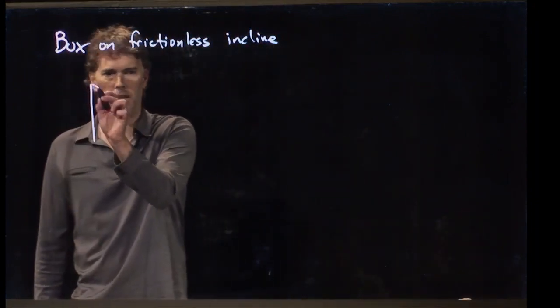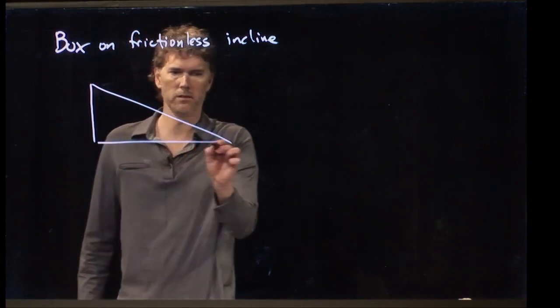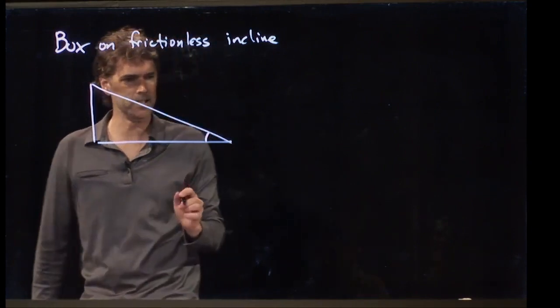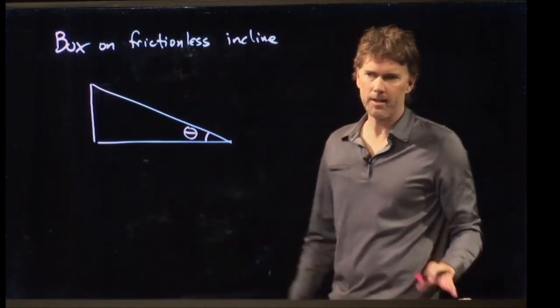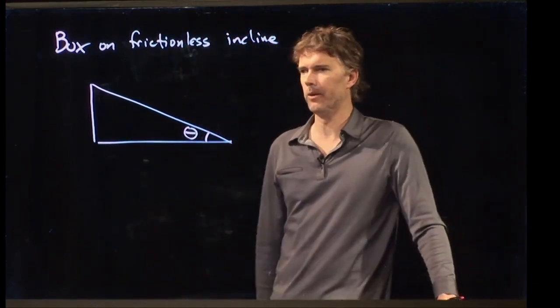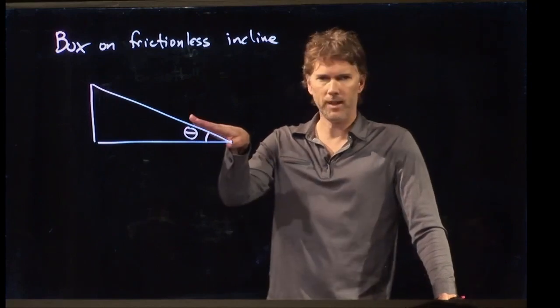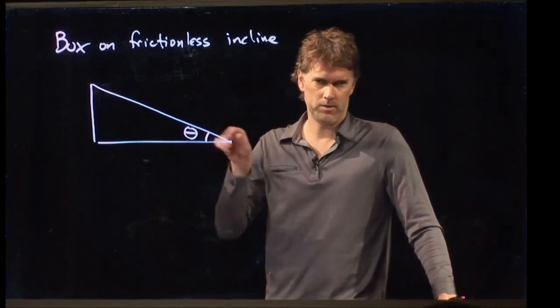So what does an incline look like? Incline looks like a triangle. This is how we always draw inclines, and we always reference that angle right there. Not always, but 95% of the time, that's the angle that we give you. What is the angle of the incline relative to the horizontal?